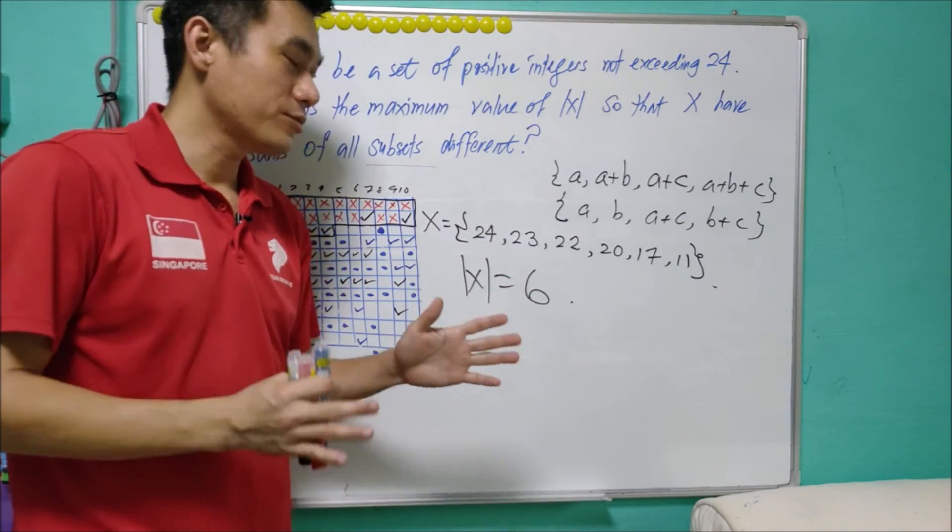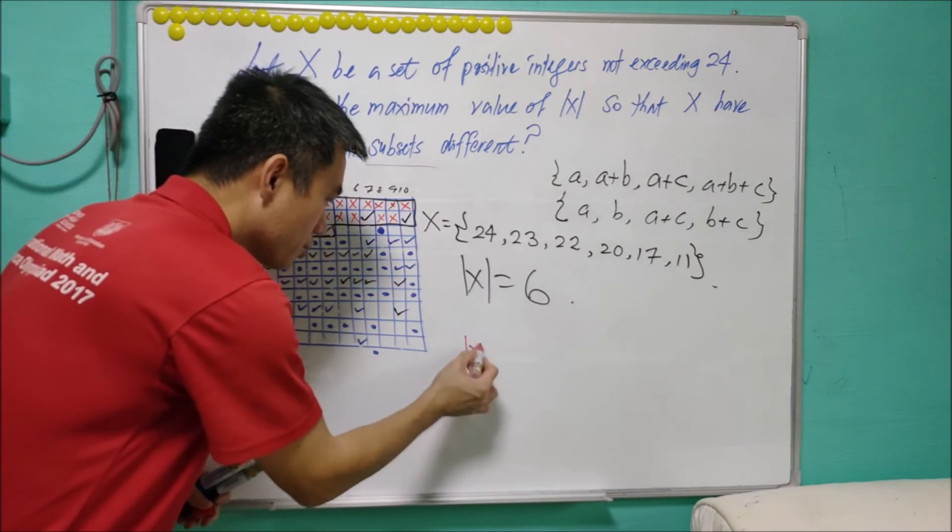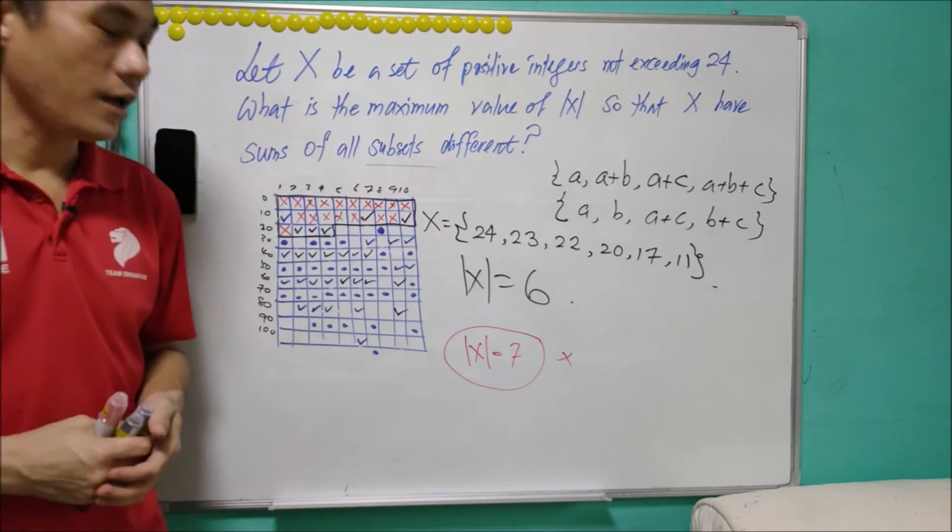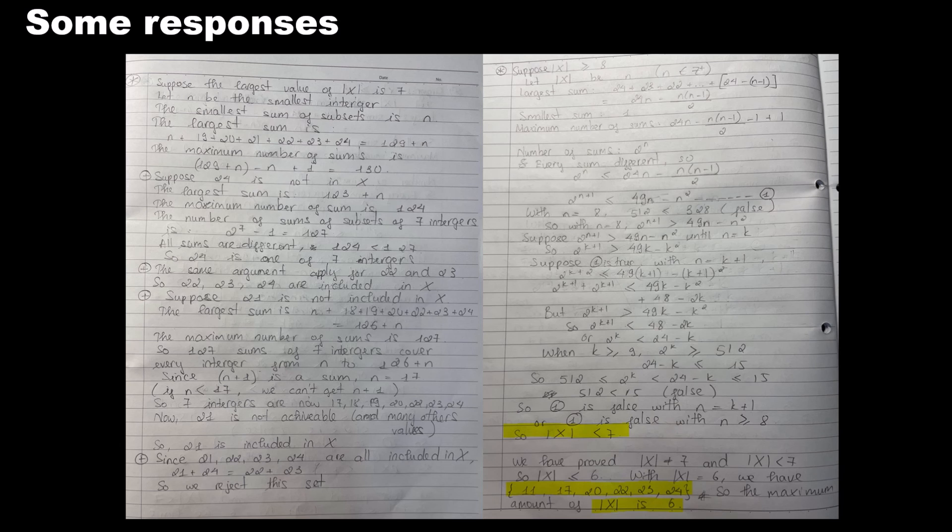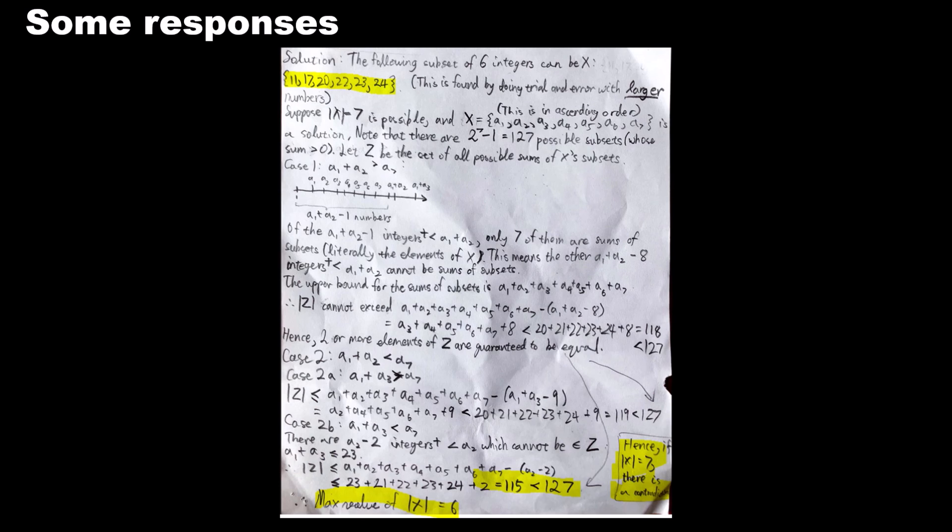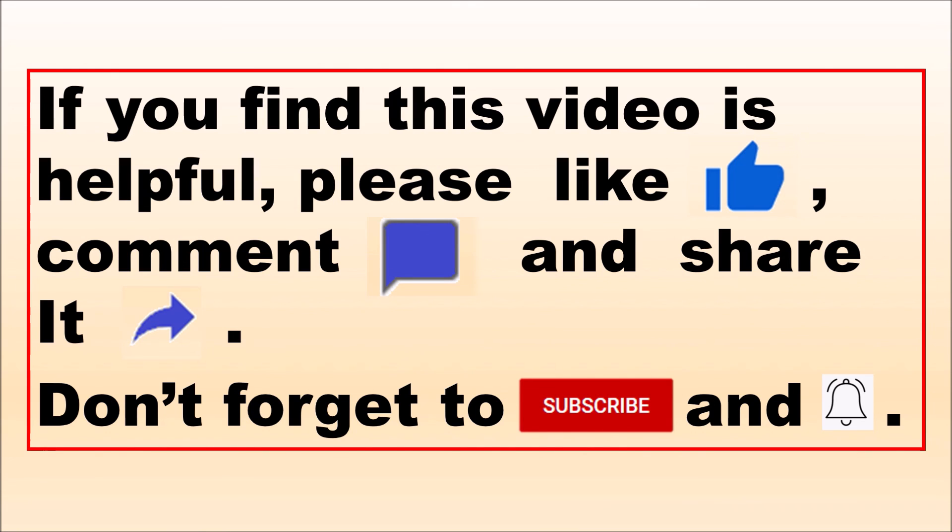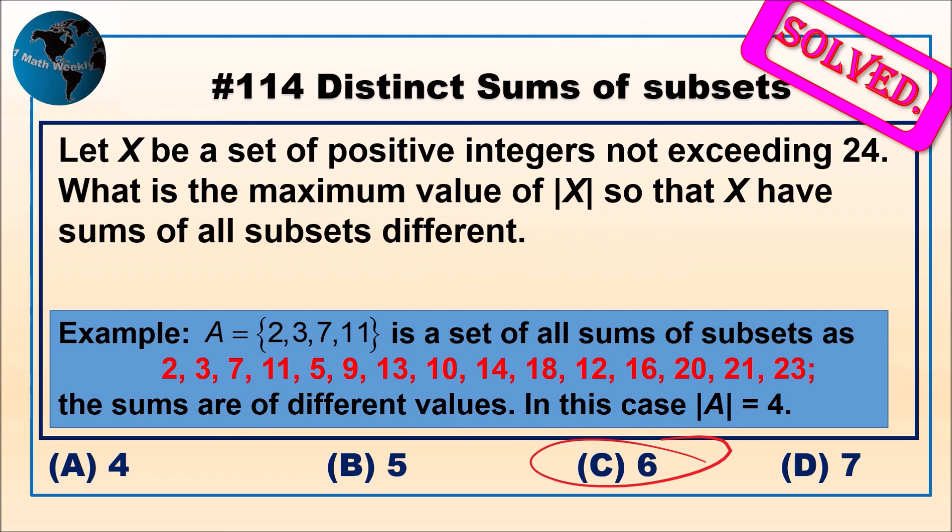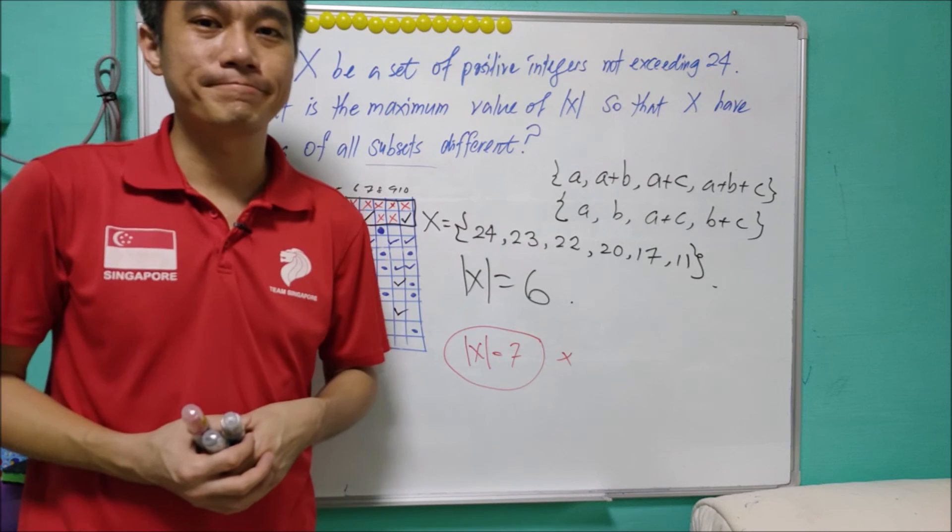The construction part is a little bit tricky, trial and error. The beautiful part is to show that 7 is not possible. And we will see how other people do, as shown here. This is the end of the lesson. Hope you enjoyed it. I'll see you next Tuesday. Bye-bye.